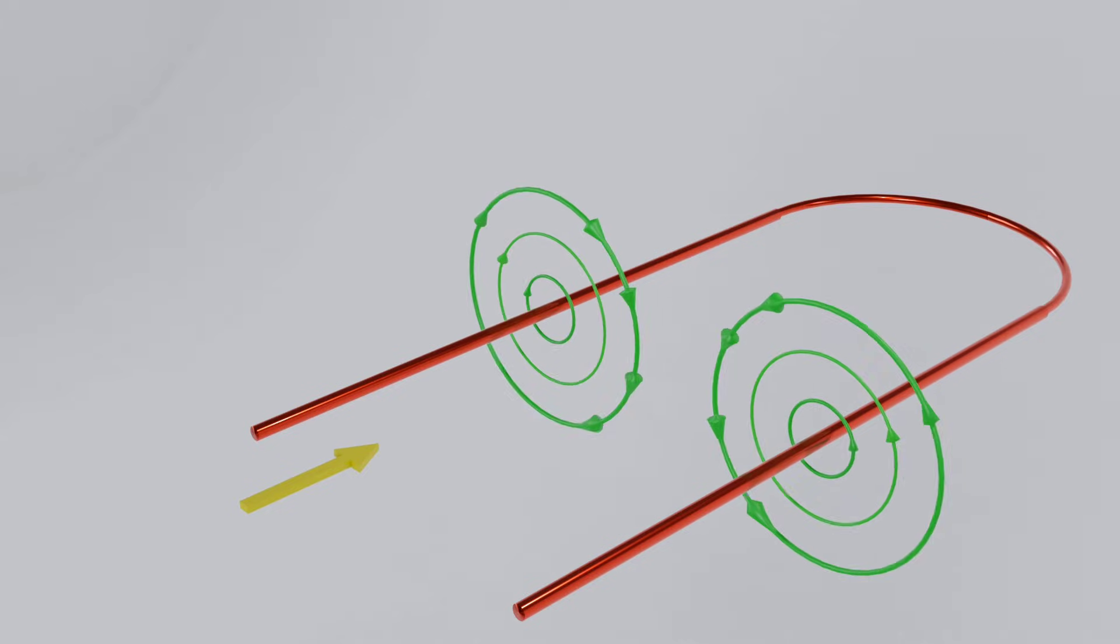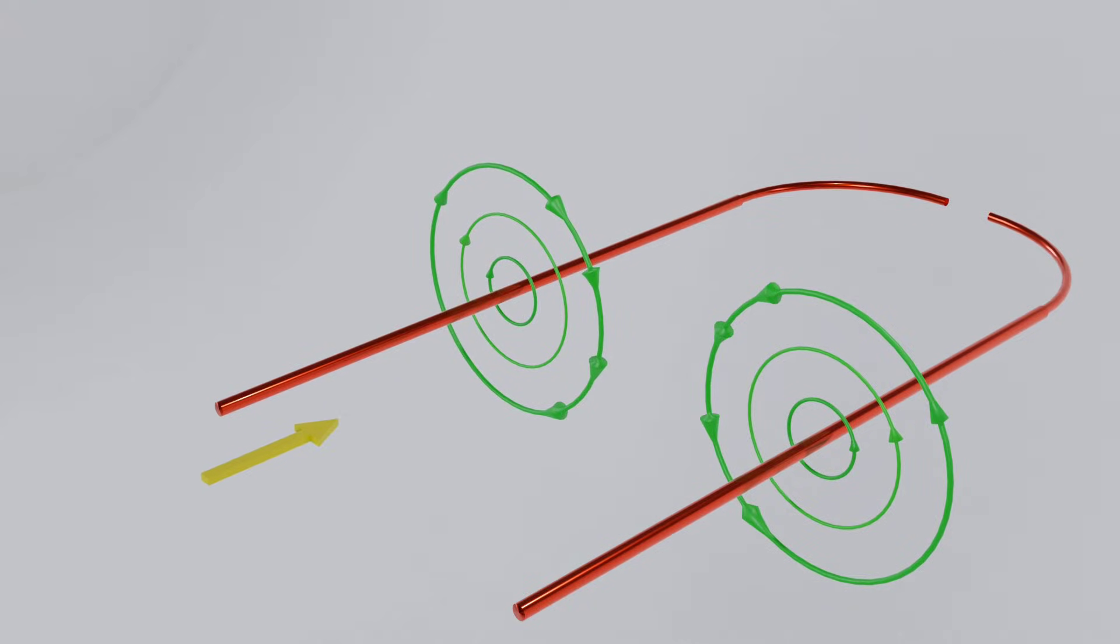When we make a coil with this wire, then flow a current, something interesting happens. To understand, we break the coil into two parts. The current flow in one side of the coil is opposite to the other side.